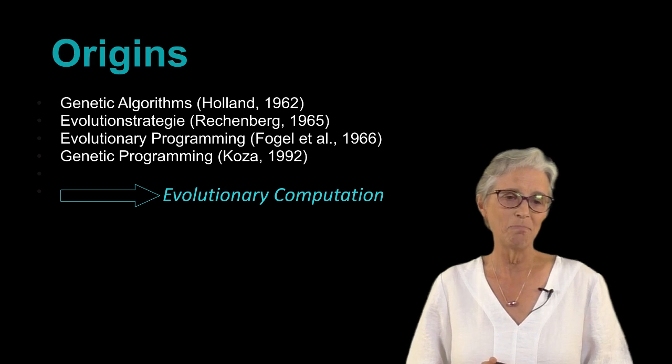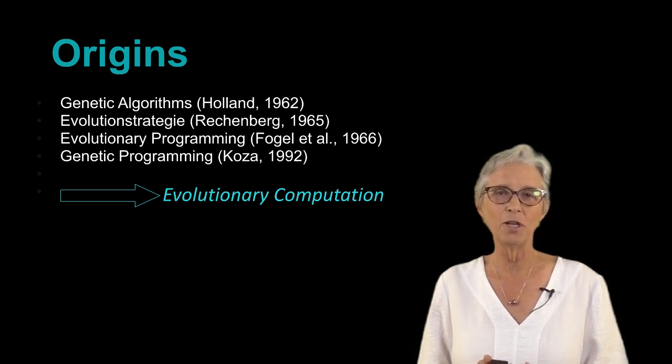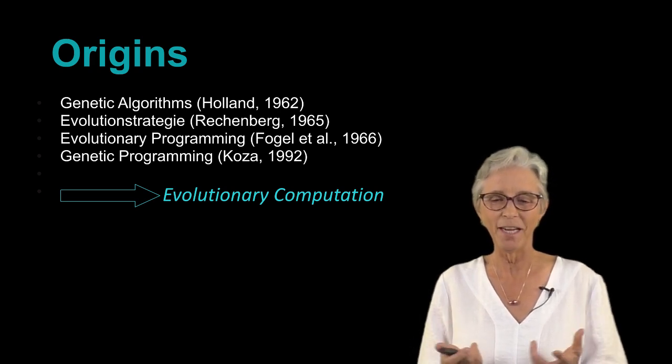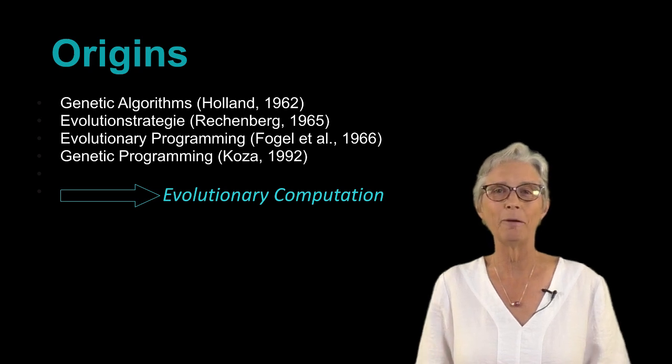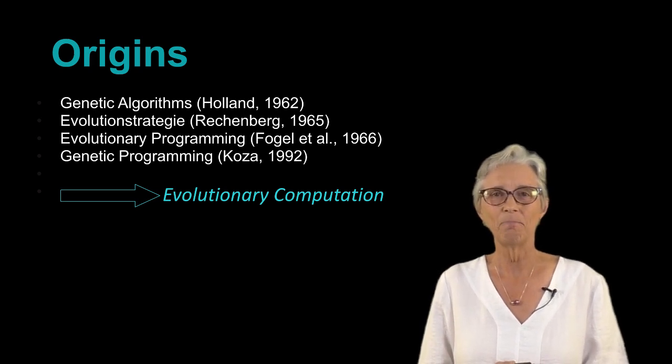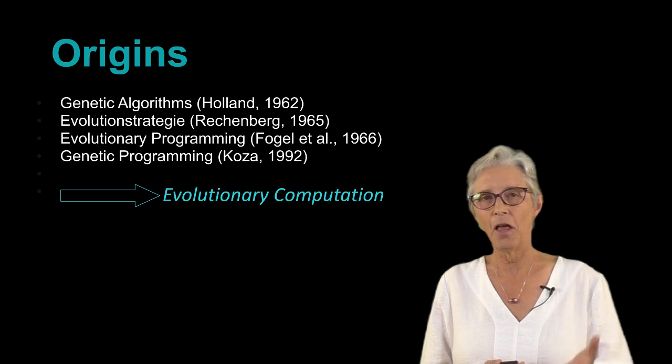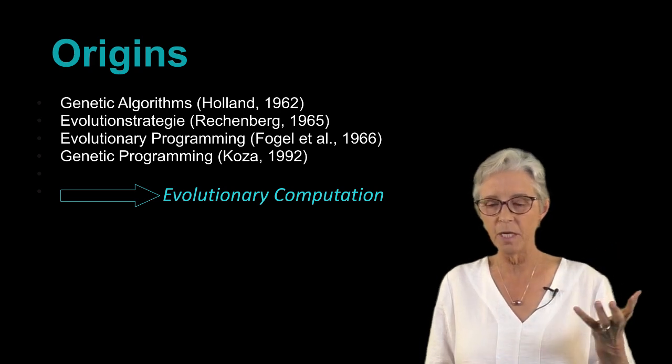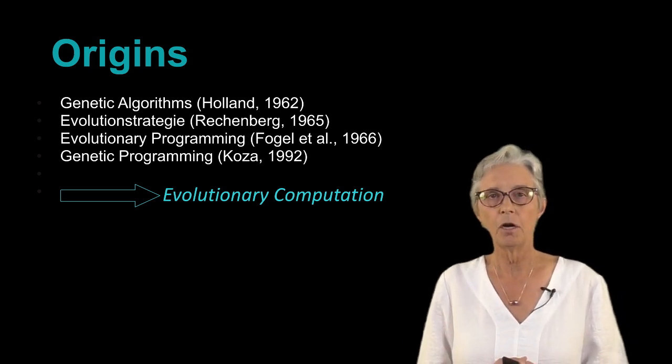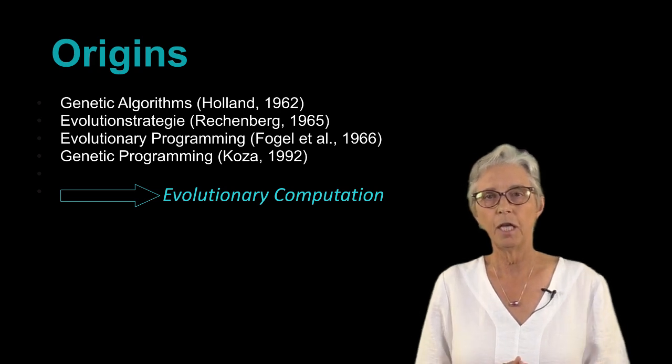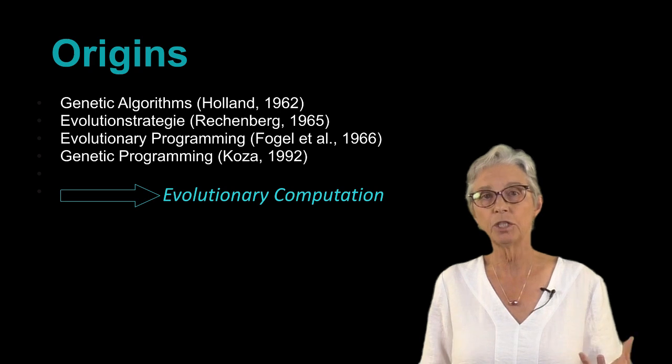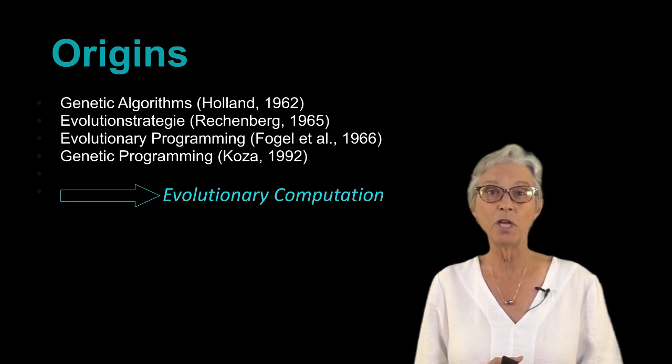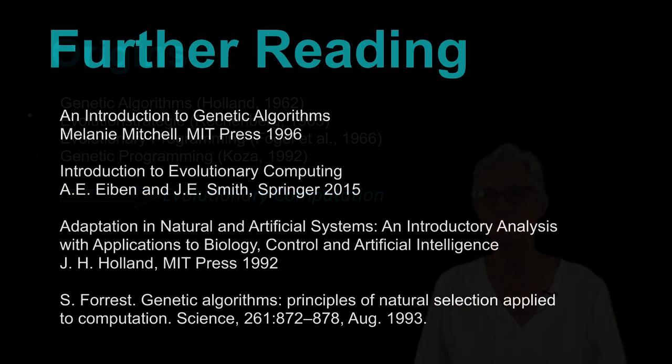Then in the early 1990s, John Koza came along and really blew open the field by showing how we could use genetic algorithms to evolve computer programs. These separate streams of invention are now sort of lumped together and the field is called evolutionary computation. And needless to say, there's been a lot of recombination between these different origins.